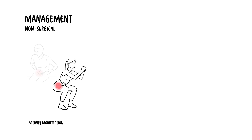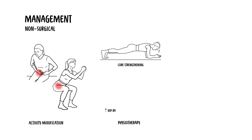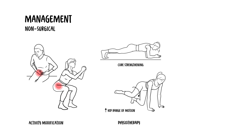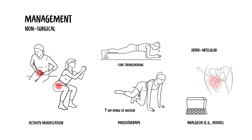Initial management for femoral acetabular impingement syndrome is non-surgical. This includes activity modification — avoiding positions that exacerbate the impingement such as deep squats or prolonged sitting — and physiotherapy focusing on core strengthening and improving hip range of motion. Analgesia such as non-steroidal anti-inflammatories can also be used, as well as intra-articular corticosteroid injections for symptom relief and diagnostic purposes.